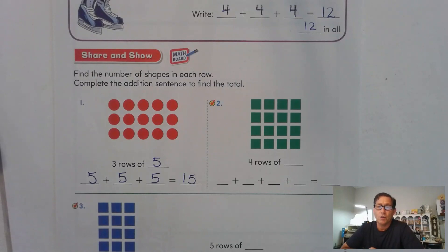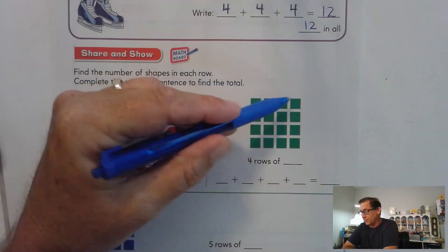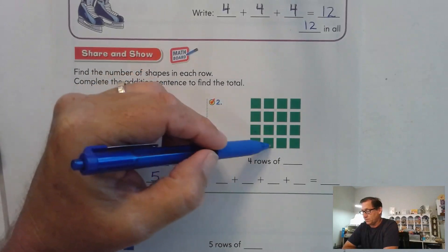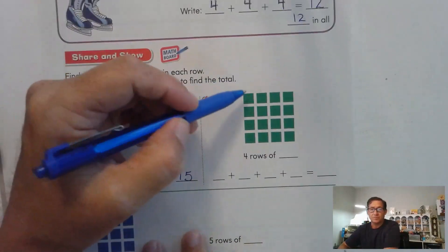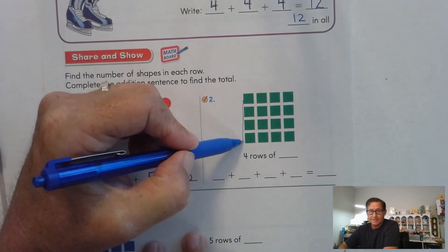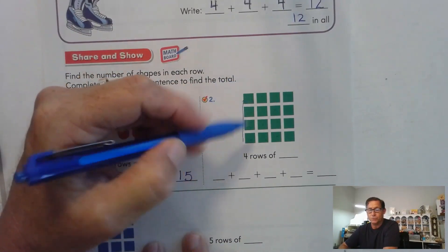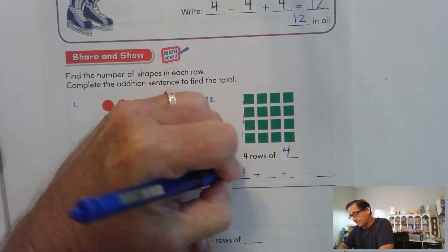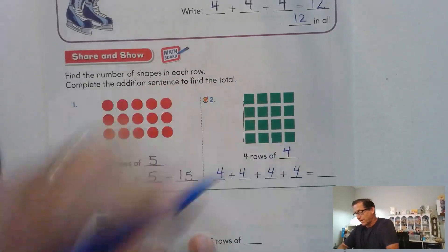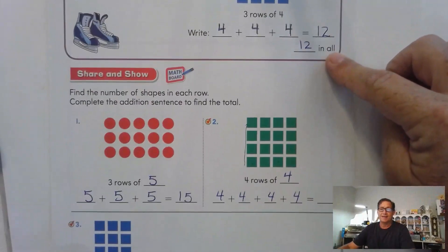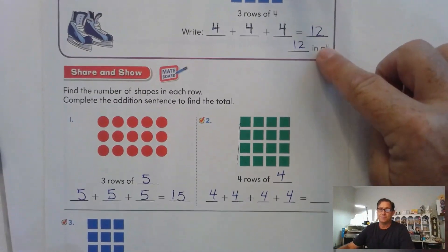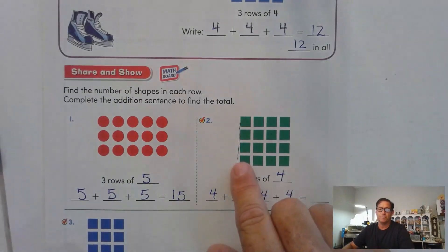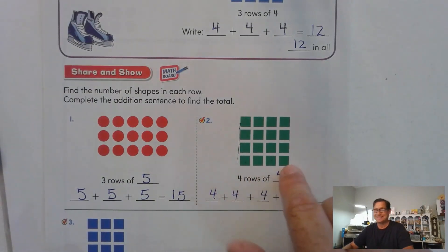What do we have here? We have four rows of four. As we go down, those are our rows — so four rows of four. From the problem above, we know that adding four three times is 12. So what's 12 plus four more? 12, 13, 14, 15, 16.